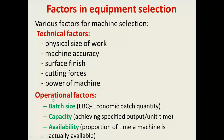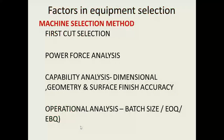In operational factors, we have to consider batch size, that is the economic batch quantity. Next is capability — achieving the specified output per unit time — and availability, which is the proportion of time a machine is actually available for use.